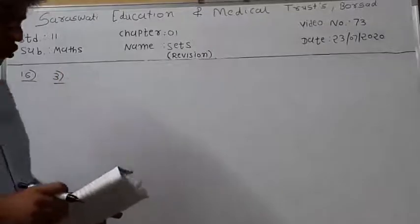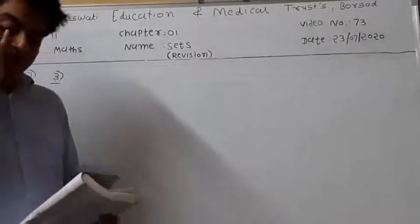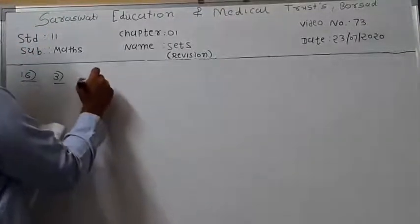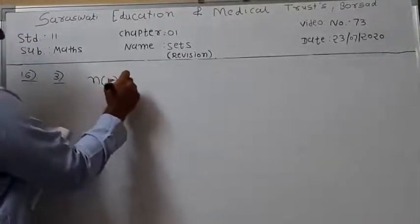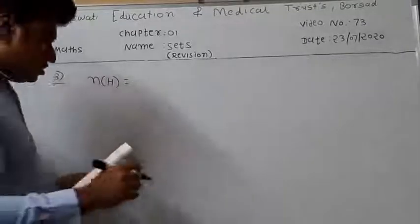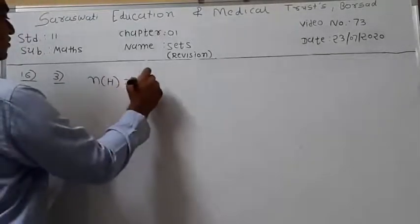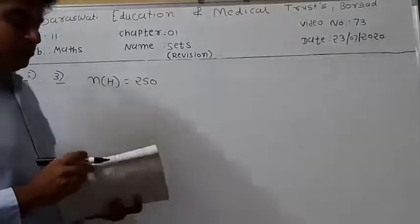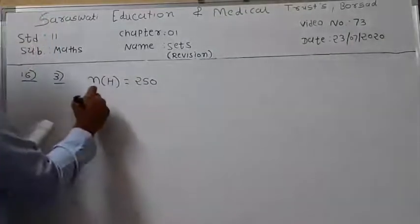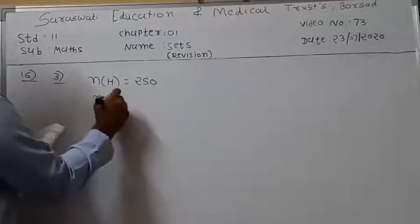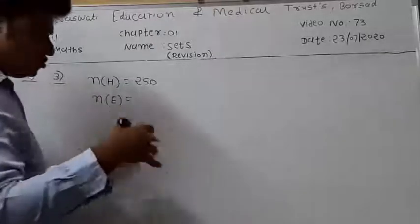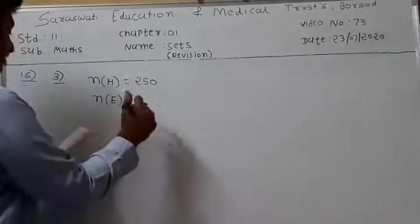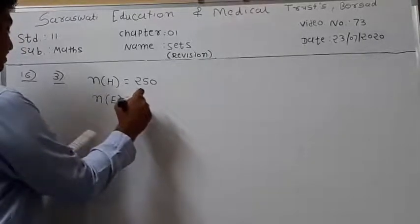In a group of 400 people, 250 can speak Hindi — we denote this as H, so N of H is equal to 250 — and 200 can speak English, denoted as E, so N of E is equal to 200.